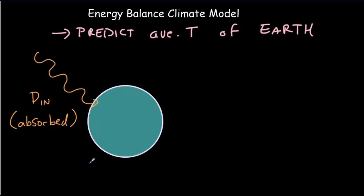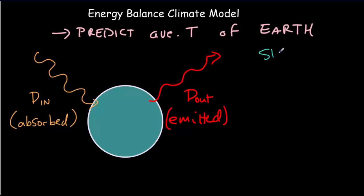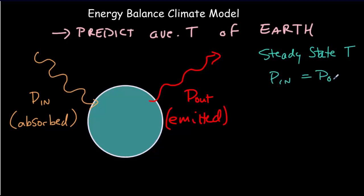All that radiation that's absorbed is then re-emitted at a different wavelength, so we have output power as well — this is emitted power. And if we're to get a steady-state temperature, then the input power and the output power have to be the same size. If the input power was bigger, the temperature of the Earth would rise. If the output power was bigger, the temperature of the Earth would lower. So we're looking for the steady-state temperature, and that will be true when the input power equals the output power.